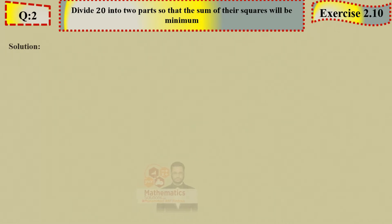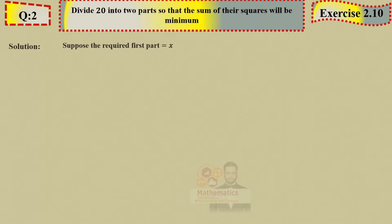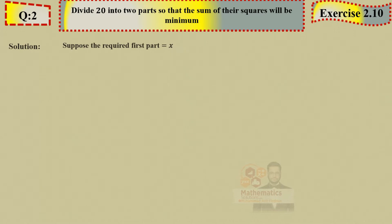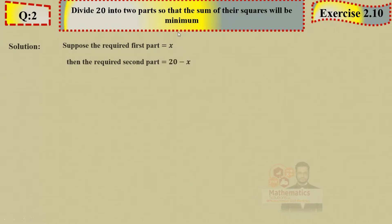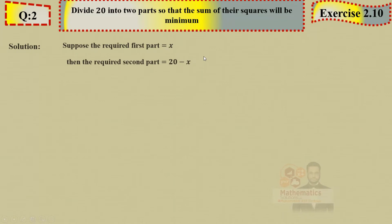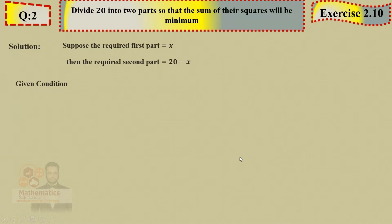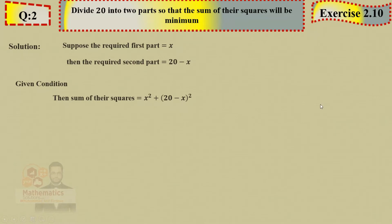The word 'divide' here doesn't mean regular division — it means splitting 20 into two parts. So let the first part be x; then the second part = 20 − x (total minus x). We don't know x, we'll find it. Given condition: sum of their squares — so S = x² + (20 − x)².